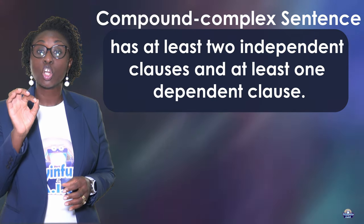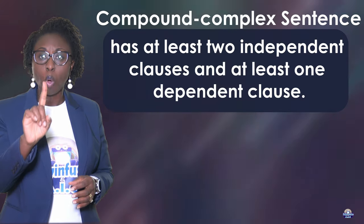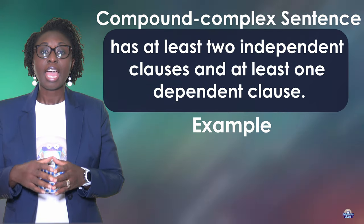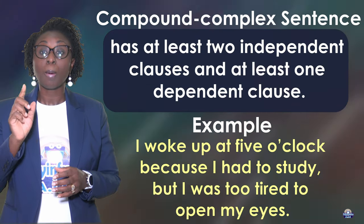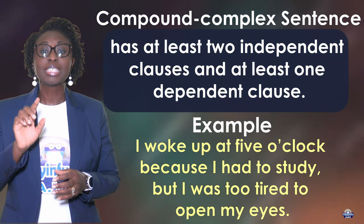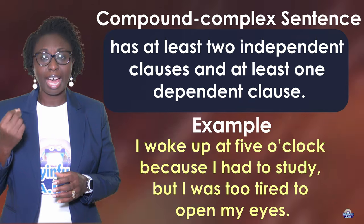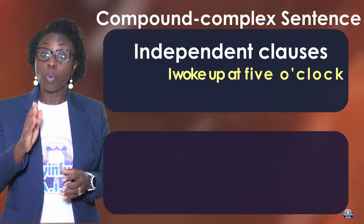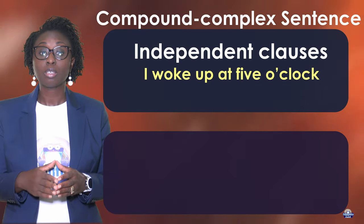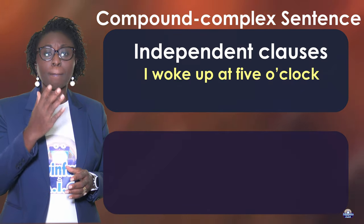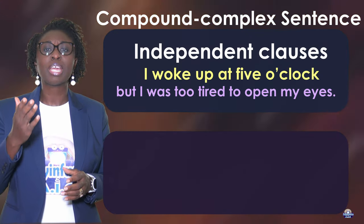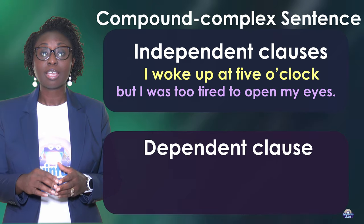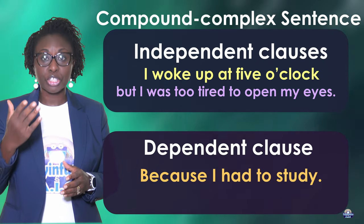A compound-complex sentence has at least two independent clauses and at least one dependent clause. For example: 'I woke up at five o'clock because I had to study, but I was too tired to open my eyes.' The independent clauses are 'I woke up at five o'clock' and 'but I was too tired to open my eyes.' The dependent clause is 'because I had to study.'